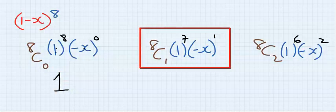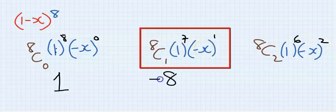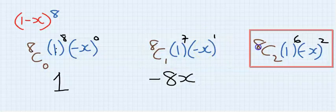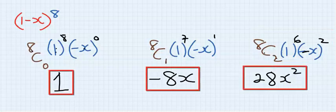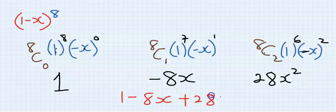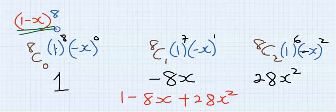Right here we have 8 combination 1 will give us 8. And here I have minus x. So the minus is here and this x is here. 8 combination 2 is 28. This is minus x minus x will give you x squared. If you put it together, you're going to have 1 minus 8x plus 28x squared. This is the first three terms of this expansion.